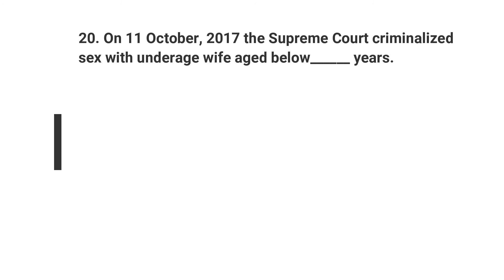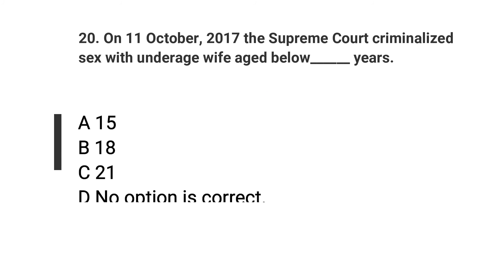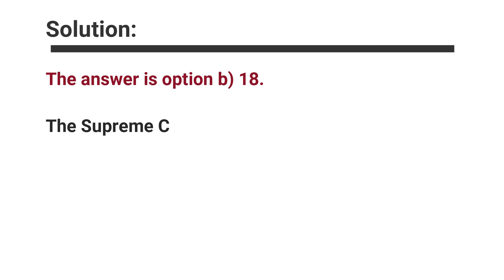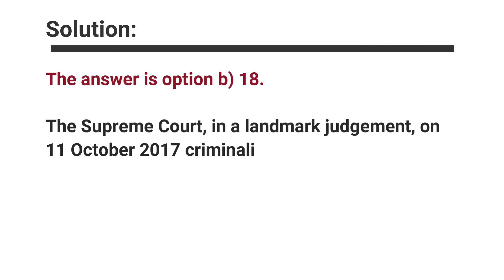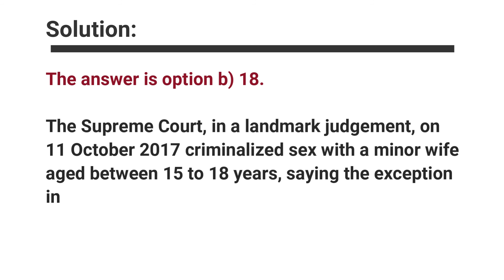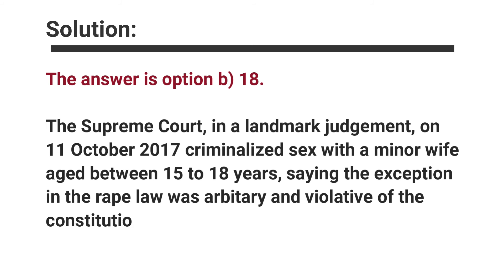Question number twenty: On 11 October 2017, the Supreme Court criminalized sex with an underage wife aged below dash years. Options are A. 15, B. 18, C. 20, D. No option is correct. The answer is option B, 18. The Supreme Court in a landmark judgment on 11 October 2017 criminalized sex with a minor wife aged between 15 to 18 years, saying the exception in the rape law was arbitrary and violative of the constitution.